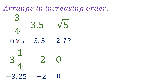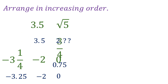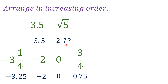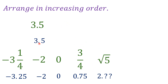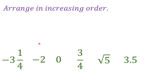Among the positive numbers, 0.75 is the smallest because it doesn't even reach 1, while the remaining are a whole number 3 and 2 point something. So 0.75 comes next, followed by the square root of 5 which is 2 point something, and then 3.5 as the largest. Now you can remove the decimal conversions and you have the numbers arranged from smallest to biggest — this is increasing or ascending order.